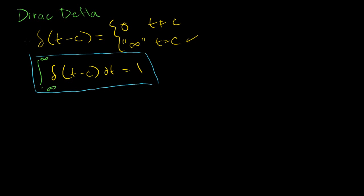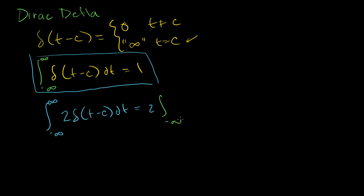Because if I have 2 times the Dirac delta function, then if I'm taking the area under the curve of that — 2 times the Dirac delta function of t minus c dt — this should be equal to 2 times the area under just the Dirac delta function, which is 2 times 1, so equal to 2. So if I put a 2 out here, this infinity will have to be twice as high so that the area is now 2. That's why I put that infinity in parentheses.